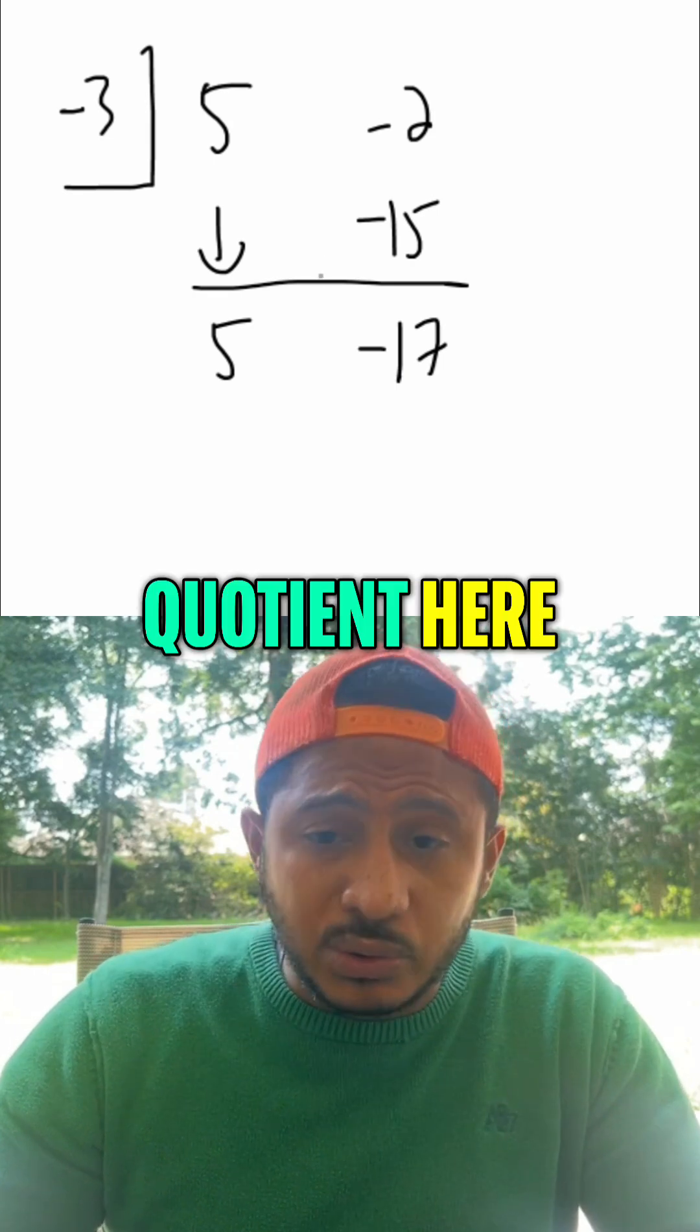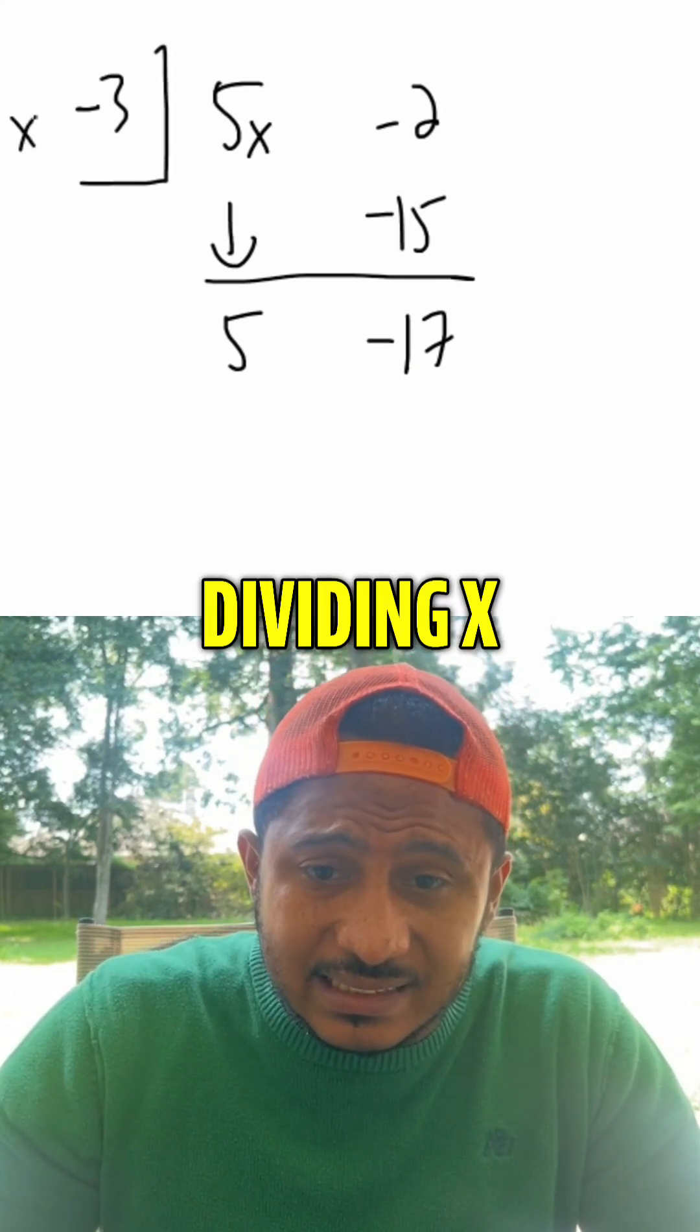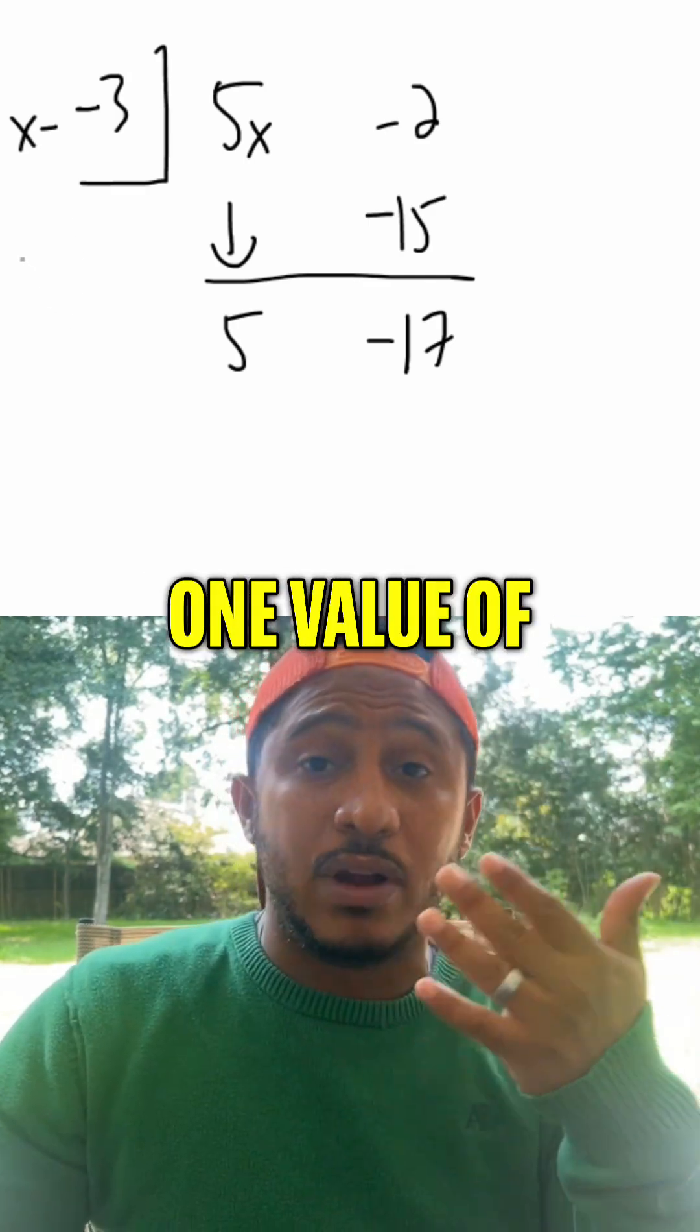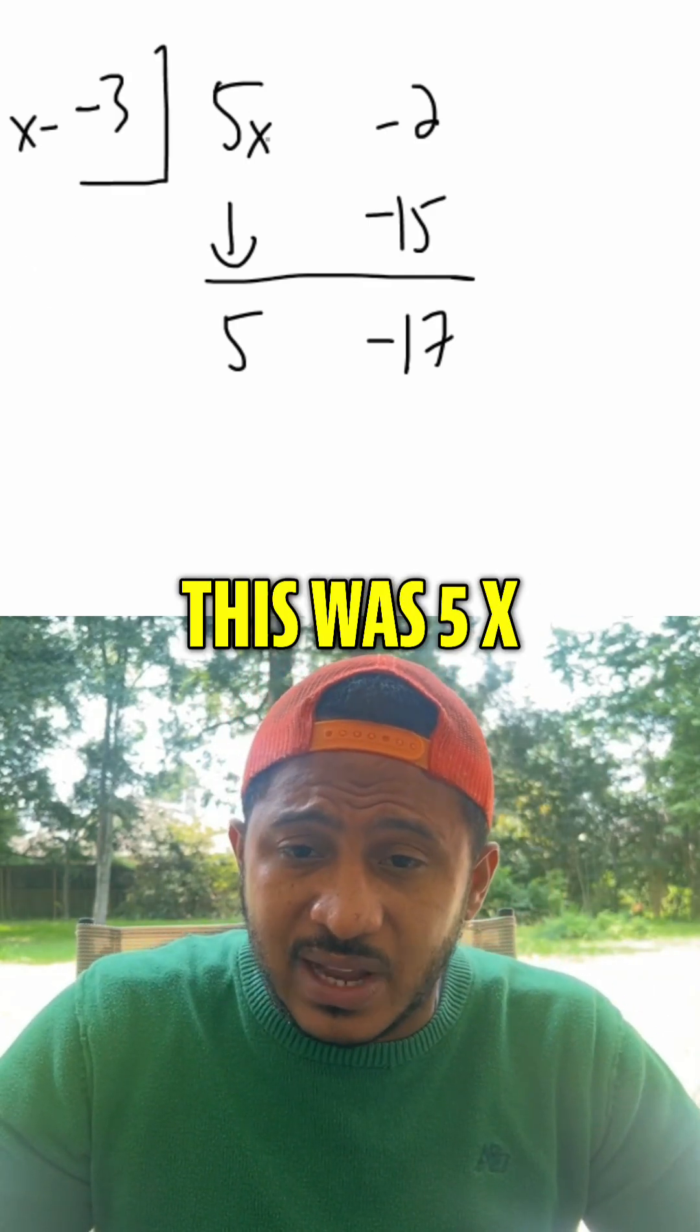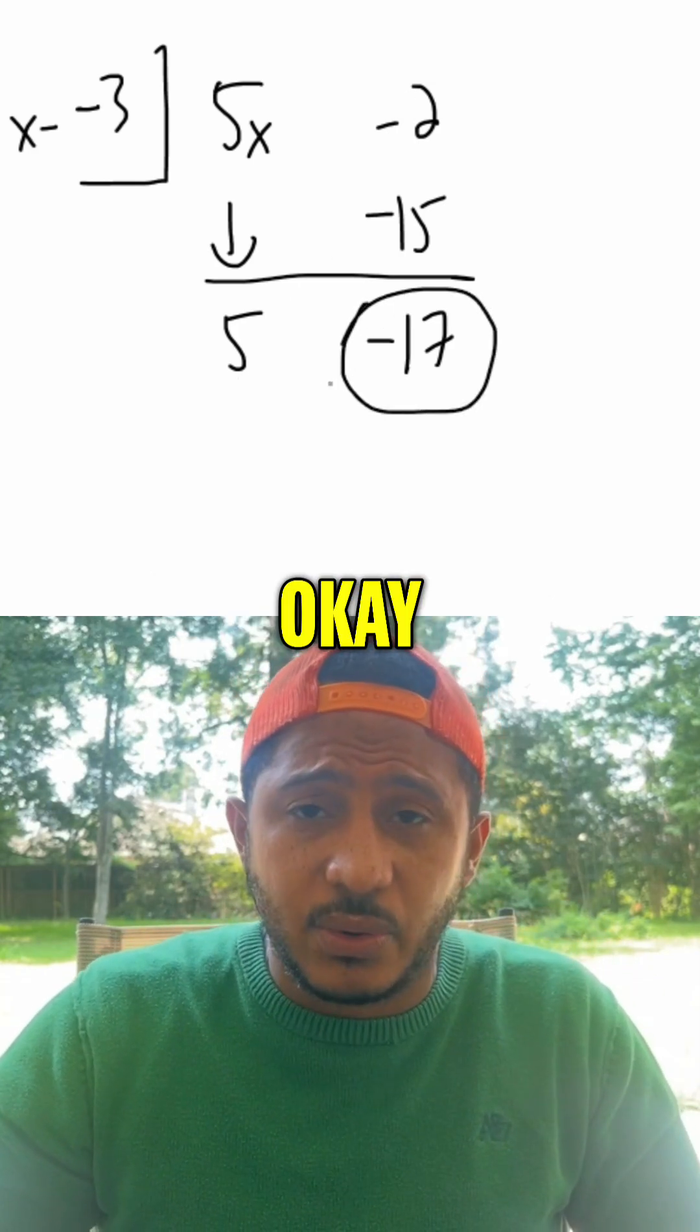So our quotient here would be - this is a 5x minus 2, we're dividing by x minus that negative 3. Then everything goes down one value of x. This was 5x, so this goes down and becomes the constant. This was the constant, so this becomes the remainder.